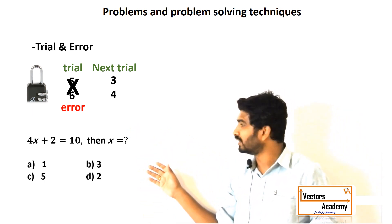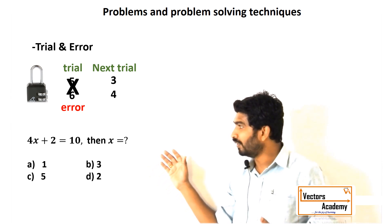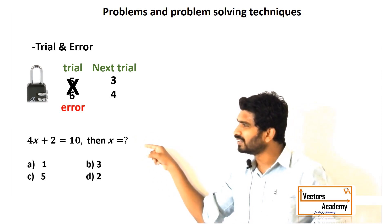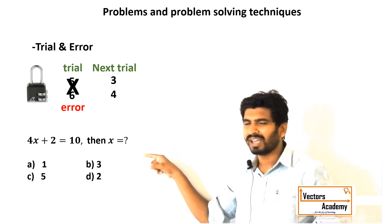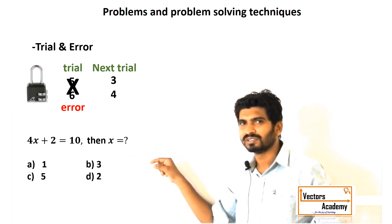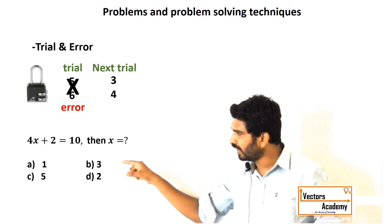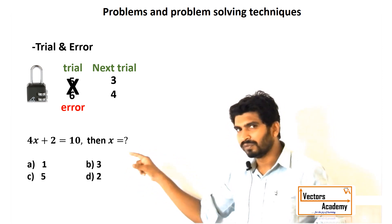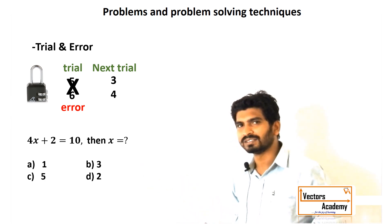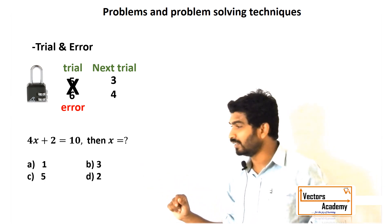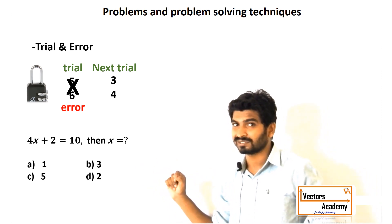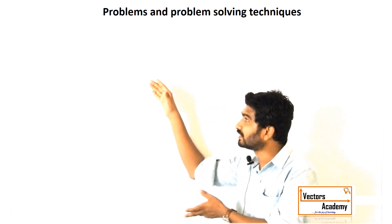For example, in multiple-choice questions in entrance exams, instead of solving the problem, we can try out options one by one — A, B, C — and if none of those work then D will be the answer. This is the trial and error technique, which can be useful in certain cases.